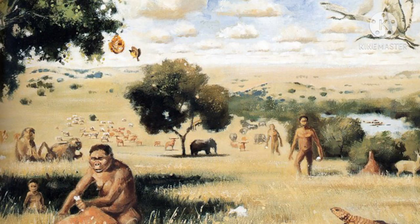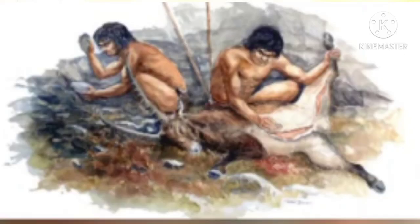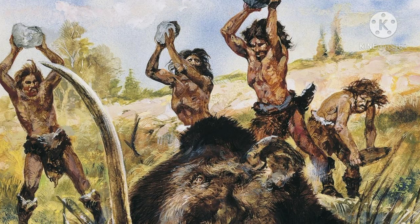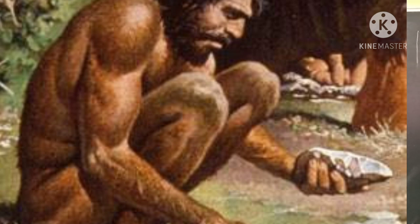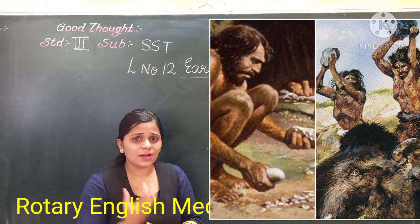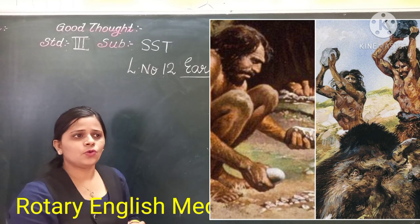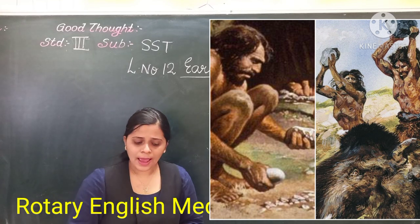These early humans found great difficulty taking out the roots from the ground, and they also faced difficulties killing wild animals with their hands. So these early humans felt the need of tools for the purpose of hunting animals and taking out roots from the ground. They started using big and small stones to kill animals and to dig out plants from the ground.